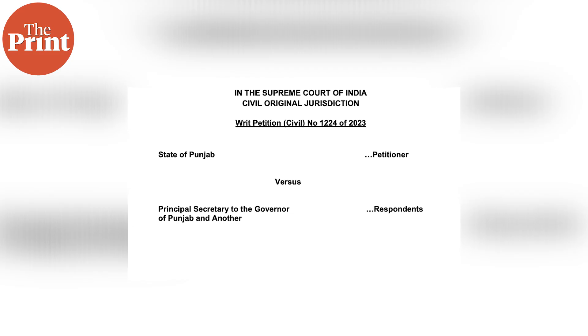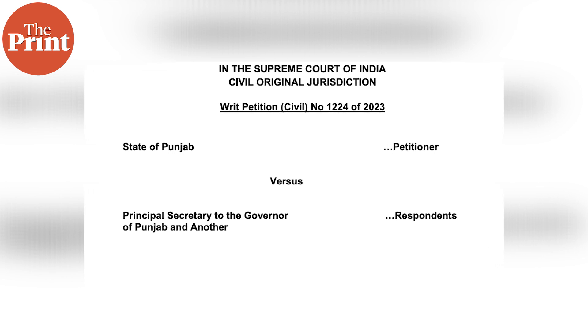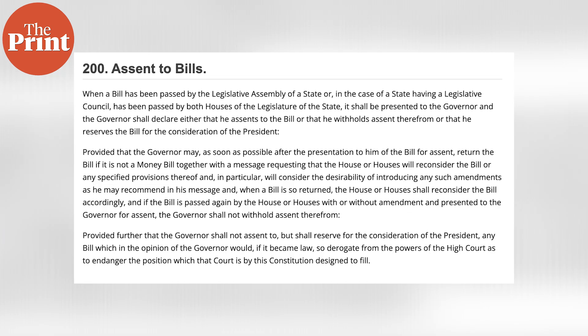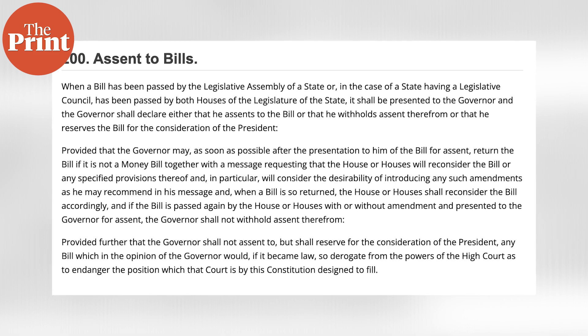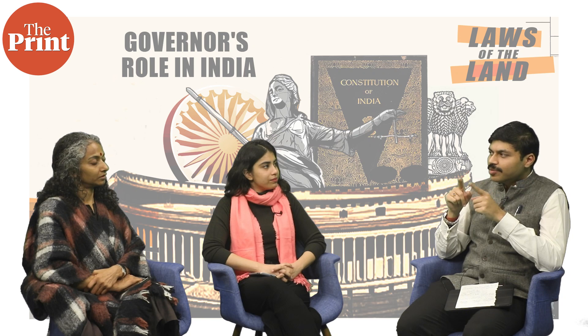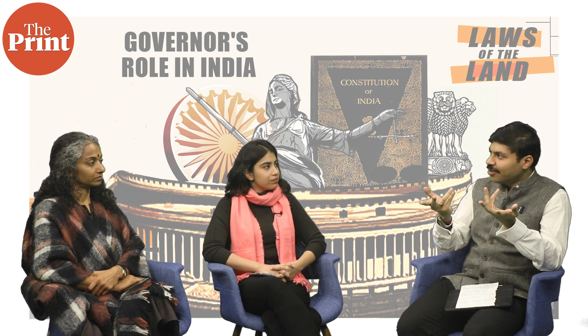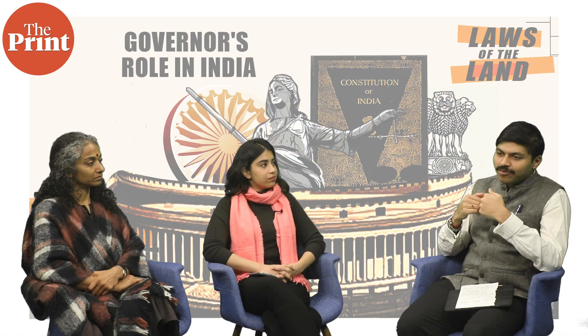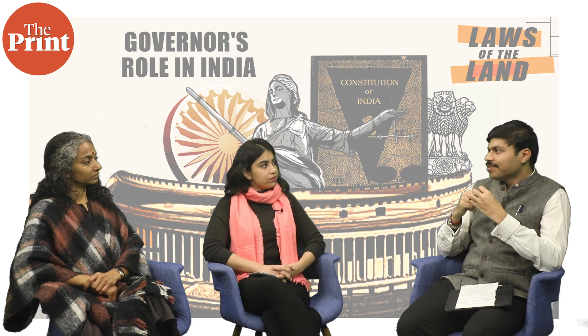The Punjab government filed an Article 32 petition in the Supreme Court again. The Supreme Court initially waited to see if the governor would act, but when he did not, the court passed judgment. They reprimanded the governor without mincing words. On Article 200, they said: whatever you do — give assent, withhold, or send to the president — you must declare. You can't stay mum. The declaration is a constitutional mandate. Also, the governor should act as soon as possible; there is a mandate of constitutional expedition, as bills may become stale.